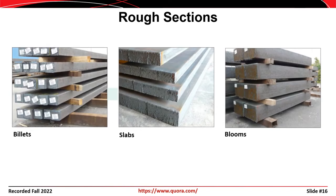This slide shows billets on the left, slabs in the center, and blooms on the right. Billet steel would be rolled into bars and wires. Blooms would be rolled into structural shapes like channels or I-beams, and slabs would be rolled into plates.